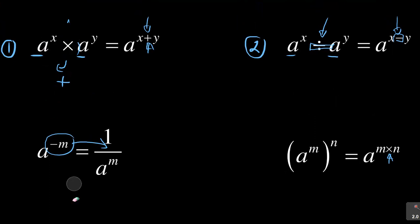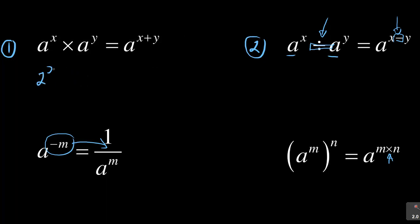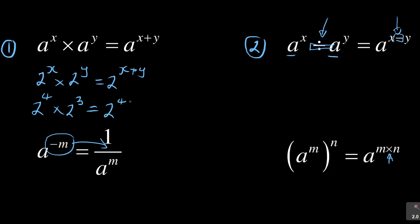For some quick examples: if I've got 2 to the exponent X times 2 to the exponent Y, this is the same as 2 to the exponent X plus Y. For example, 2 to the exponent 4 times 2 to the exponent 3 — when multiplying, remember I must add 4 plus 3, which gives 2 to the exponent 7.